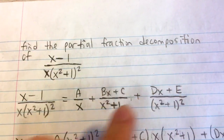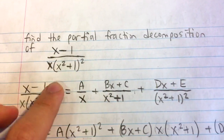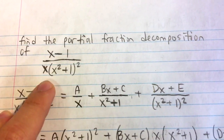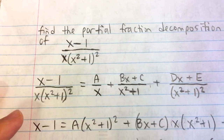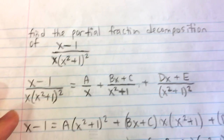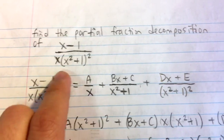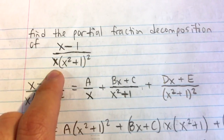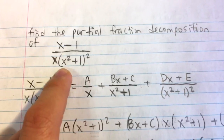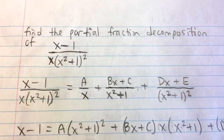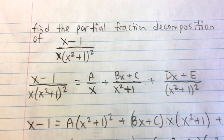Find the partial fraction decomposition of (x minus 1) over x times (x squared plus 1) all squared. First, we have to see if we can factor the denominator, which we can't. This is already completely factored.